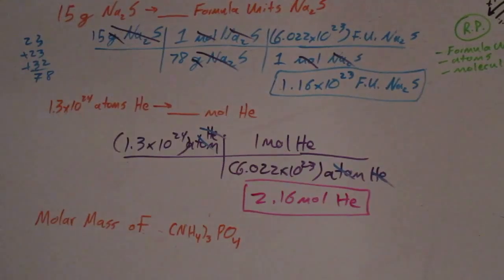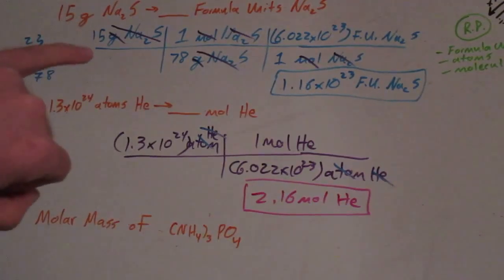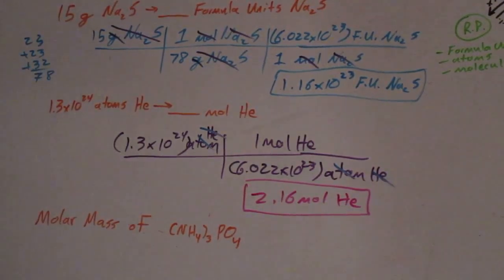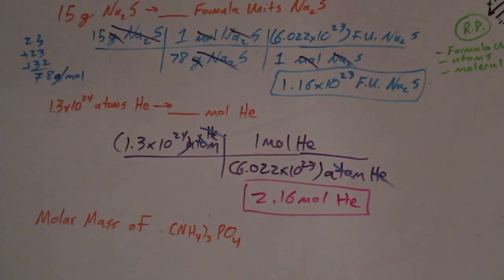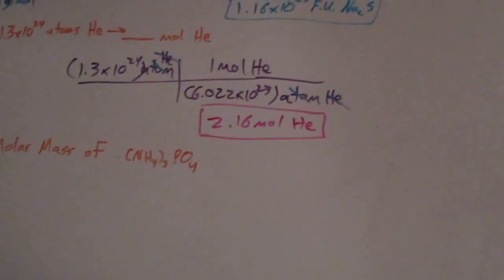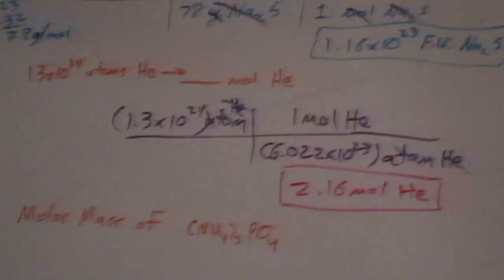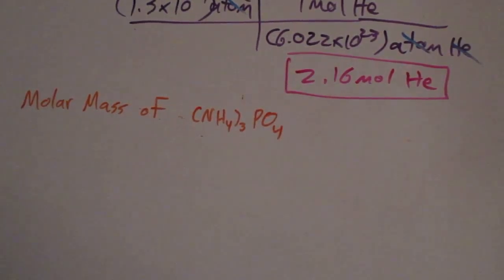The last thing I want to go over is molar mass. I already did a molar mass problem for sodium sulfide. The unit for molar mass is grams per mole. I want to focus on this last problem: the molar mass of ammonium phosphate. This one is actually pretty challenging because it covers a lot of things that people struggle with.